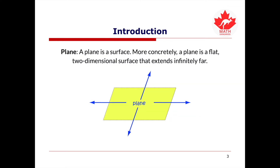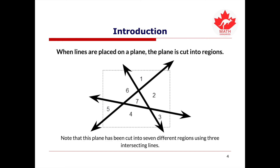A plane is a flat two-dimensional surface that extends infinitely far. An official representation of a plane is shown on the screen. When lines are placed on a plane, the plane is cut into different regions. From the visual on the screen, we can see that the plane has been cut into seven regions by three intersecting lines.